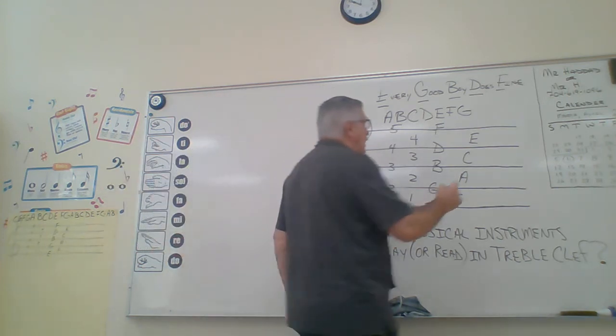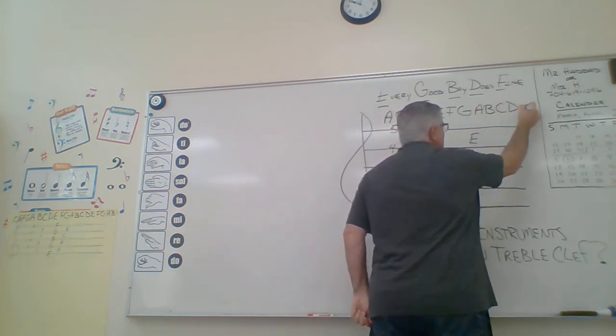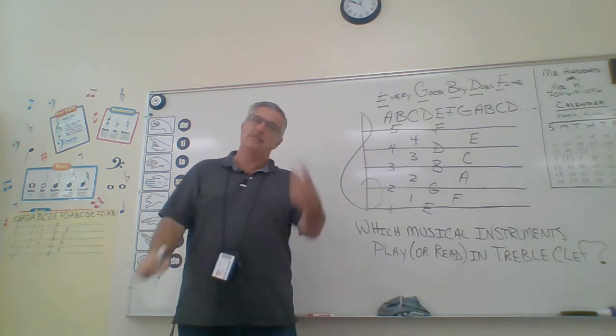So after the first seven they repeat: A, B, C, D, and etc. Does that make sense? I hope so.